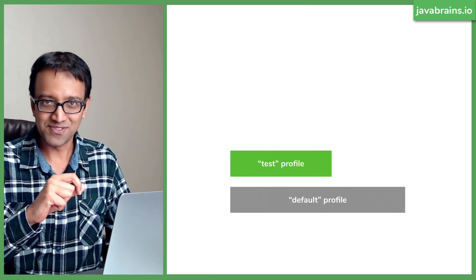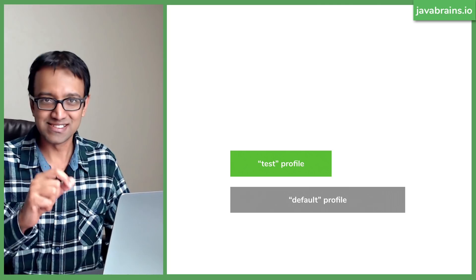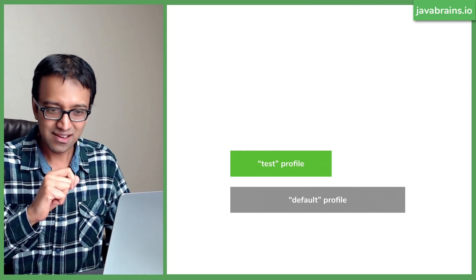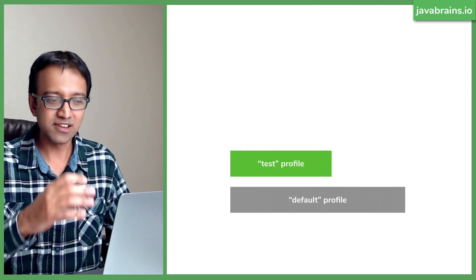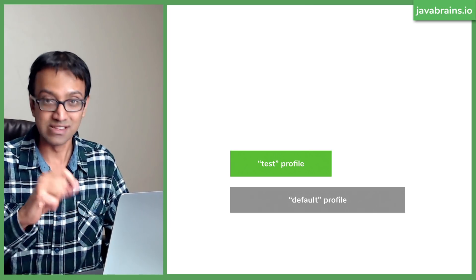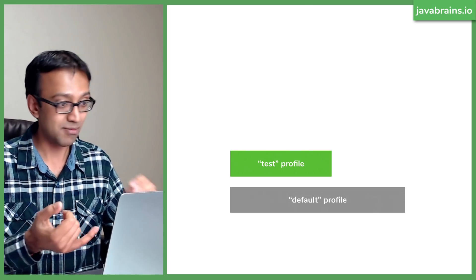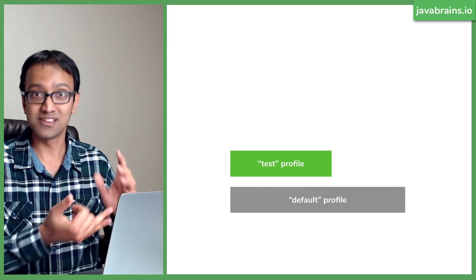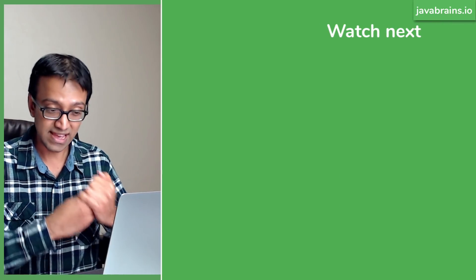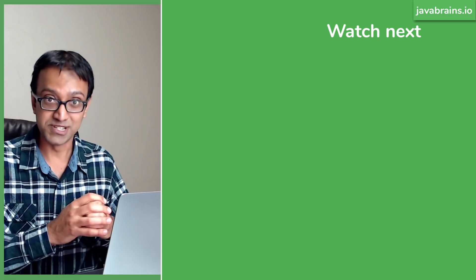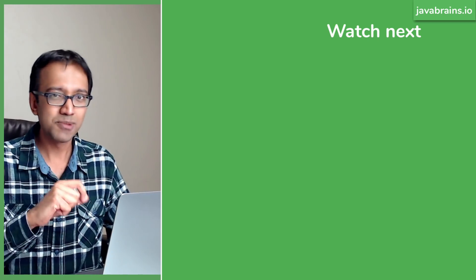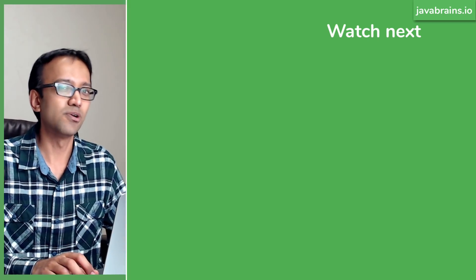Speaking of more than configuration, there is another feature in which you can detect information about the configuration and use it in your code — apart from @Value, @ConfigurationProperties, and all those other things we've seen so far. That is using the Environment object. Check out the next tutorial where I explain what the Environment object is and how you can use it in your code.